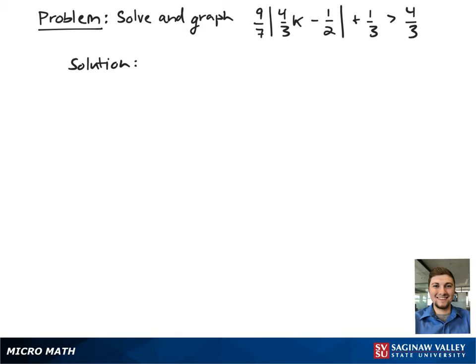Here we have the absolute value inequality, 9 sevenths times the absolute value of 4 thirds k minus 1 half plus 1 third is greater than 4 thirds.